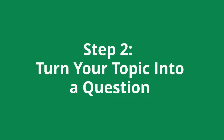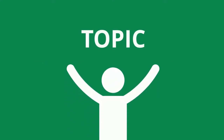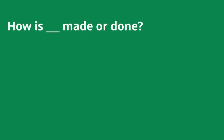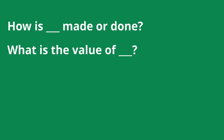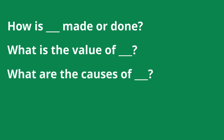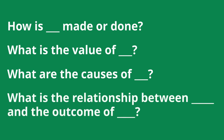Step 2: Turn your topic into a question. Once you've decided on a topic, take that idea and think about it as a question. What do you want to know about the topic? Here are some examples of the types of questions you can ask: How is blank made or done? What is the value of blank? What are the causes of blank? What is the relationship between blank and the outcome of blank?